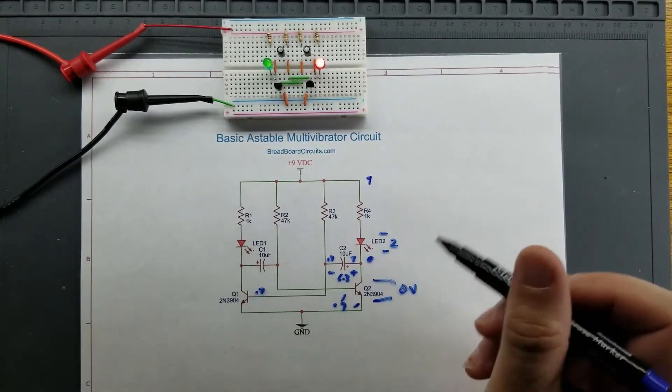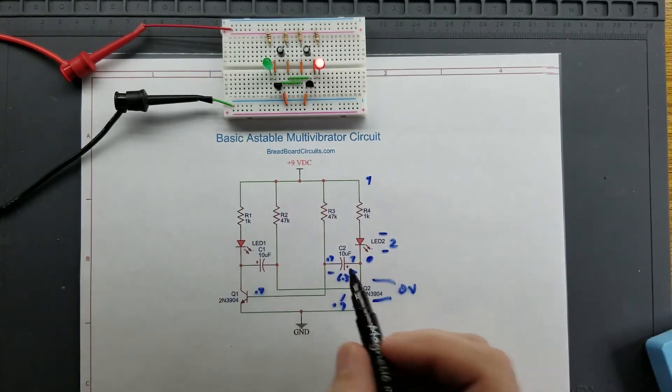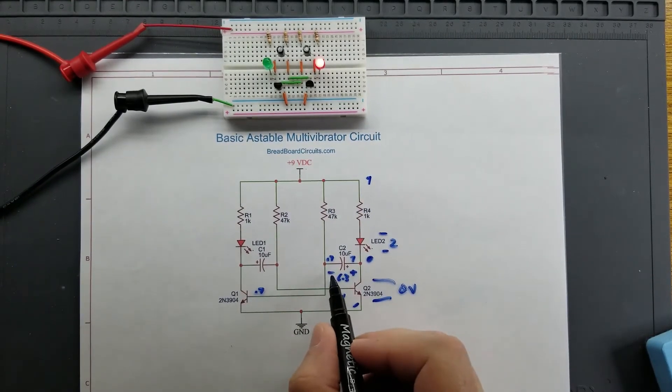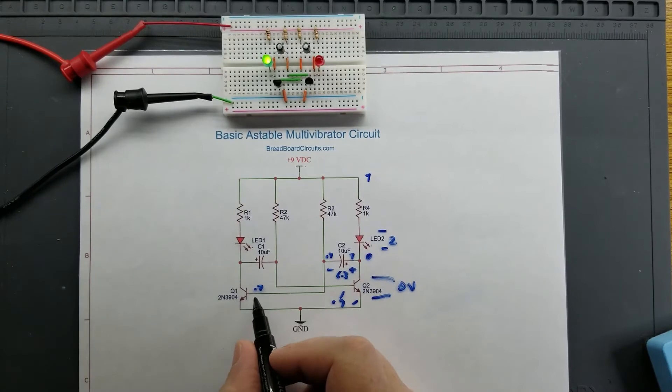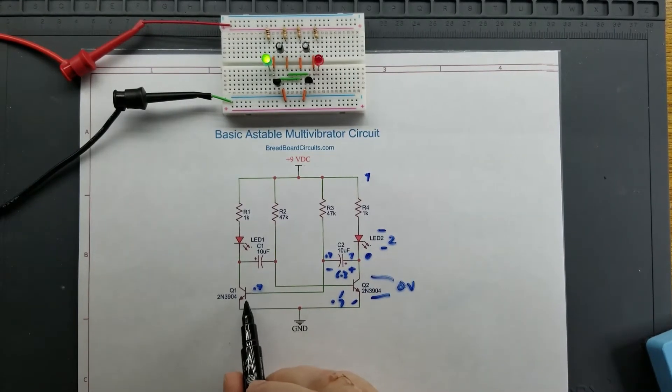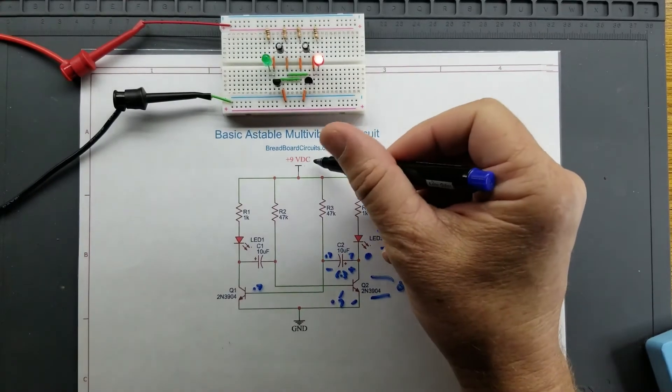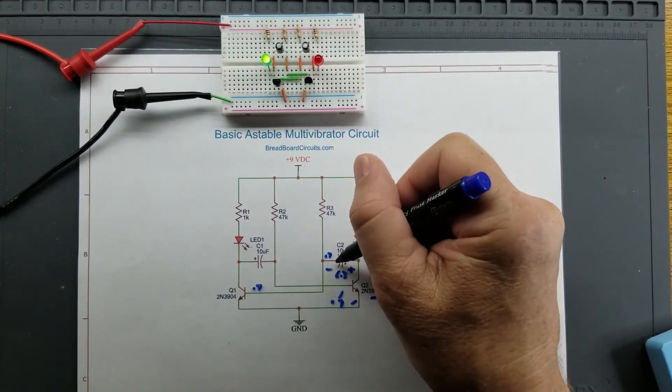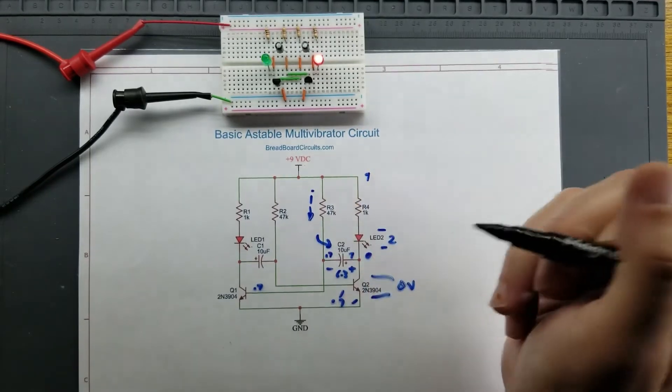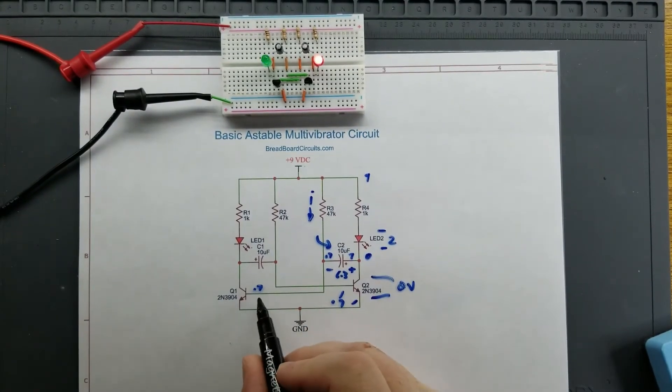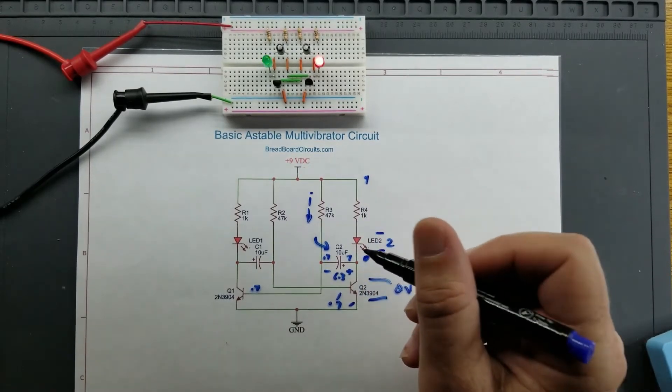So once this transistor turned on, this becomes zero. And that's going to push the 6.3 volts this way towards the base of this transistor. So you're going to get, real quickly, you're going to get minus 6.3 volts right here. And so what that's going to do is that's immediately going to turn this transistor off. So once this transistor turns off, this side will start to charge because this is zero volts. You've got nine volts here and you've got that capacitor right there. Current is going to start to flow through this resistor here. And it's going to charge that capacitor. That's zero volts. And this is going to charge up negatively. You're going to get a negative charge on that side of the capacitor.